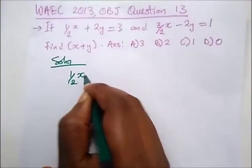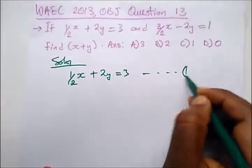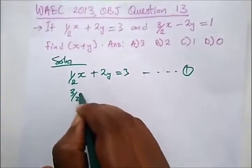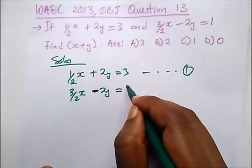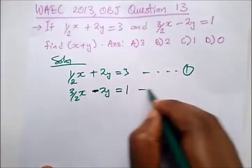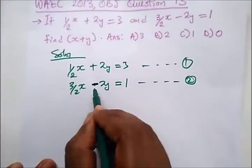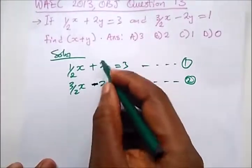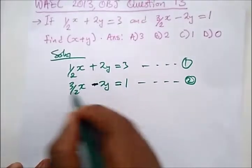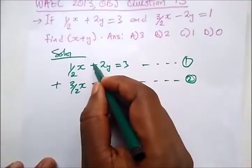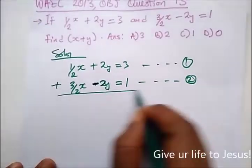So we have here half x plus 2y equals 3 as our equation 1. 3 over 2x minus 2y equals 1 as our equation 2. So from here to cancel out, the coefficients are already the same, that's 2. So to cancel out this we just add, and adding plus 2y minus 2y will give us 0.